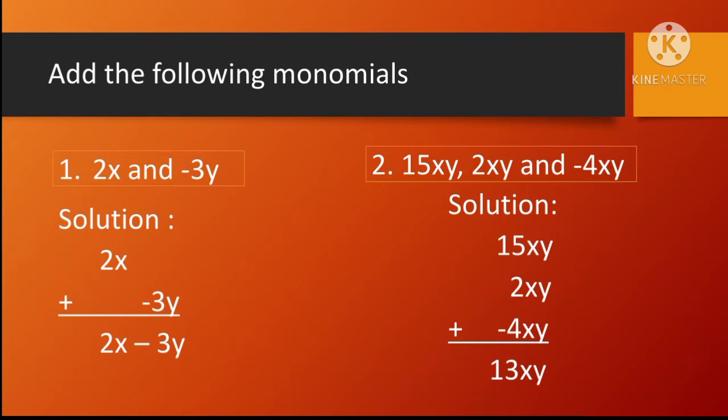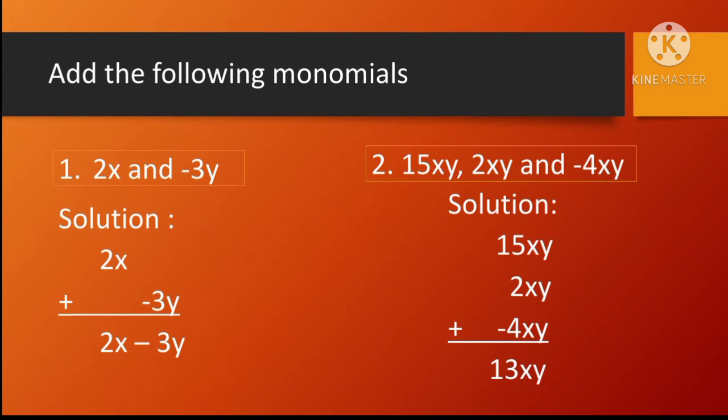Add the following monomials. Example number one: 2x and negative 3y. Solution: 2x plus negative 3y. Since 2x and 3y have different variables, the two given cannot be combined, so the sum is 2x plus negative 3y.